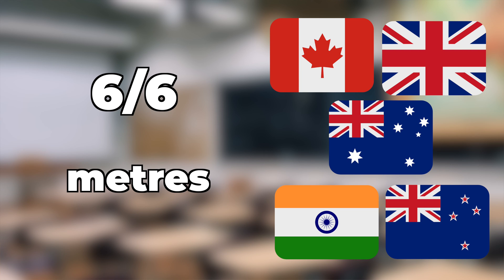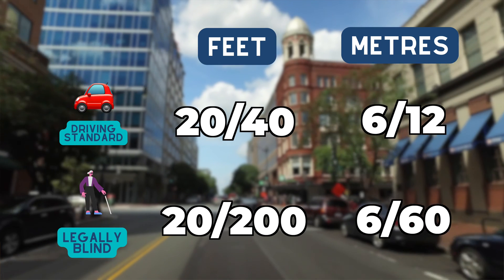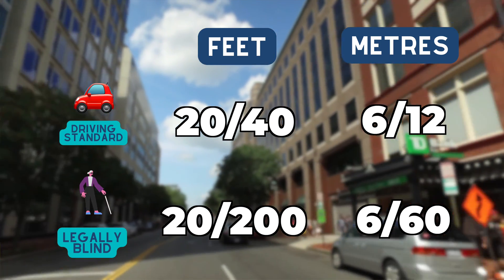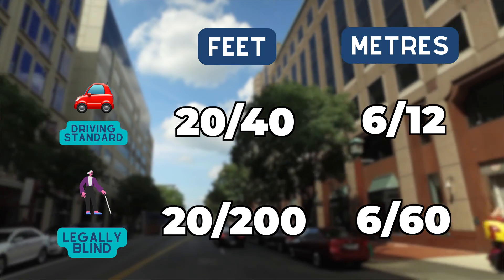The legal blindness and driving vision standards are also very similar, and because they work as ratios rather than points, converting them from one to the other is very simple.